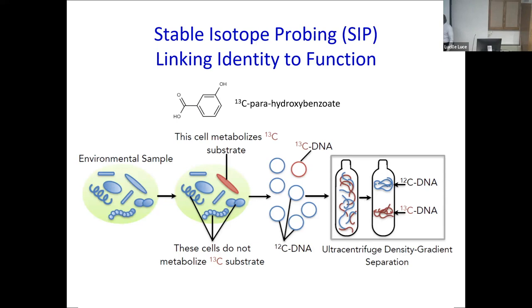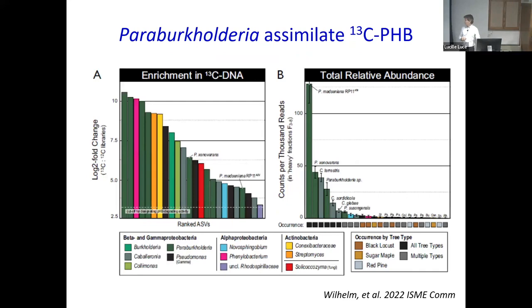This was super exciting because at the same time we were working with data from Gene Madsen, who was doing stable isotope probing experiments using 13C-parahydroxybenzoate so we could track that carbon into the microbes. What we saw from him was that these Paraburkholderiaceae dominated this activity — they were exactly the same microbes that Taryn saw.